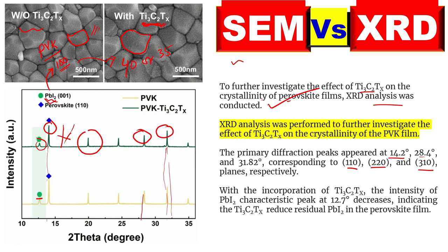So XRD analysis was performed to further investigate the effect of this material on the crystallinity of the perovskite film. With the incorporation of this material, the lead diiodide peak located at this 2-theta angle decreases. This indicates that the treatment reduces the residual — meaning the remaining lead diiodide — in the perovskite film. This is how we have to relate and interpret XRD graphs.